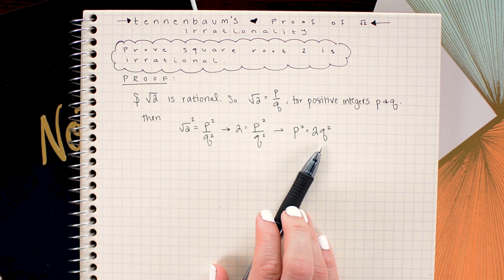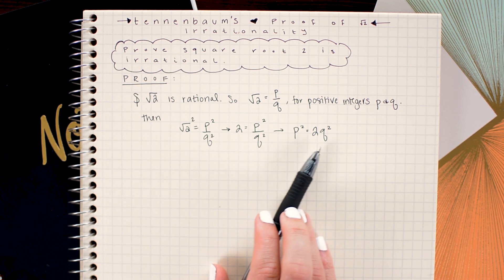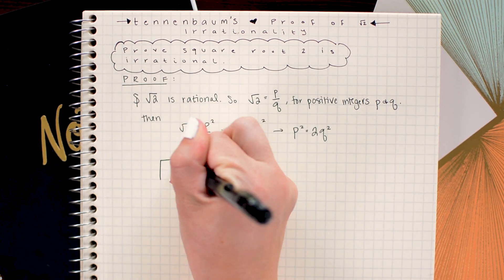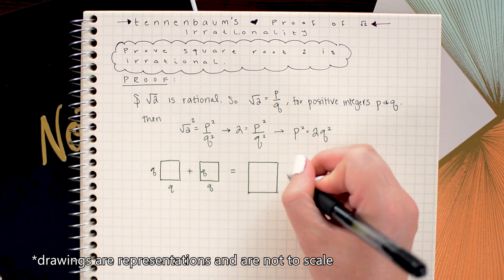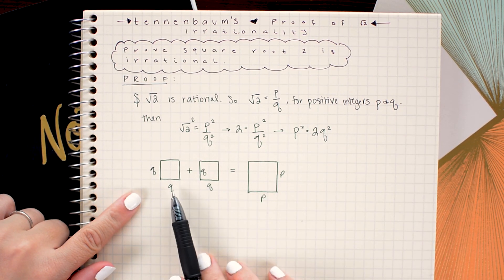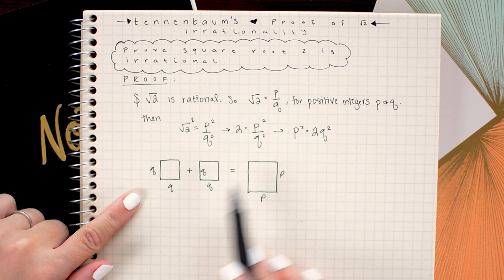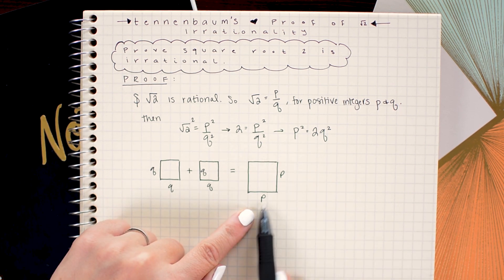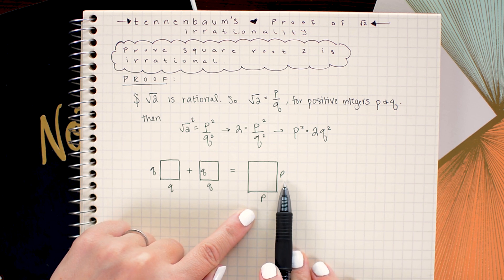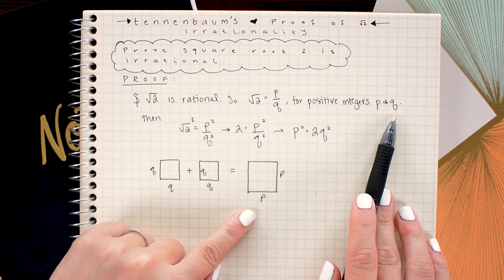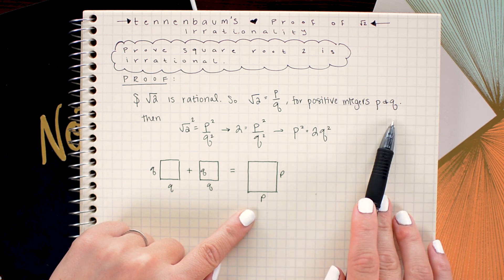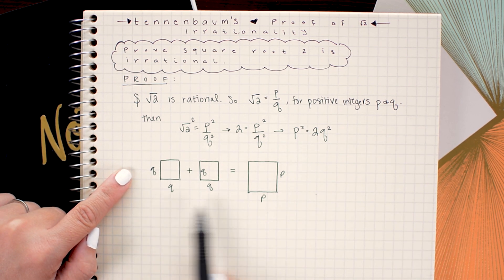So what I'm going to do next is just make a little diagram to represent these squares and from there we could take a look at how their areas are related. So here I have two q by q squares set equal to one larger p by p square and we know from our assumption up here that p and q are integers, positive integers, so all of these squares have positive lengths.